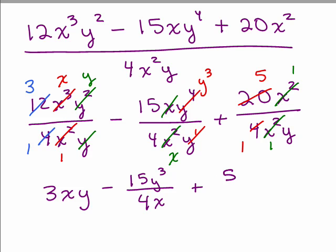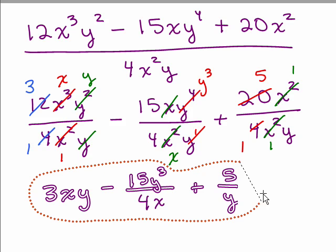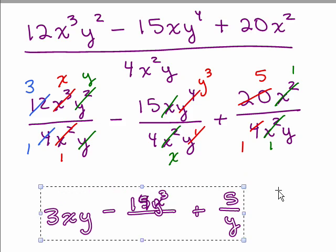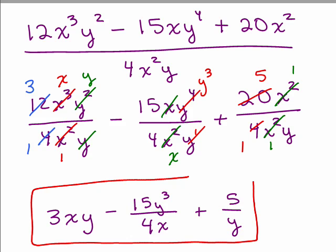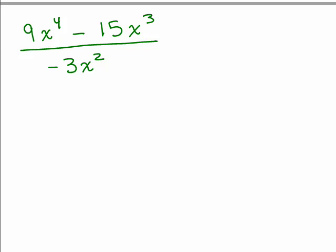So just keep in mind that when you're dividing by a monomial, you might end up with a fraction in some parts. That's our answer. The main thing is that first you just break up the numerator and put it over each denominator. Here's one more example.